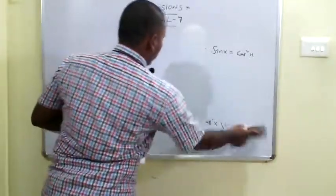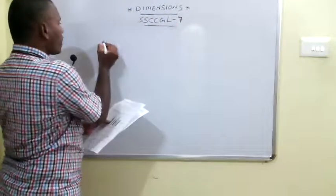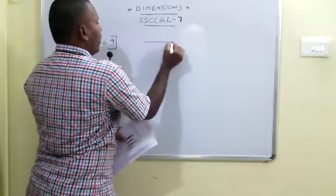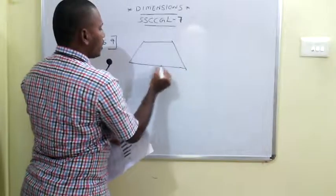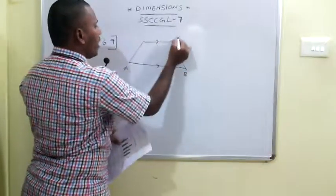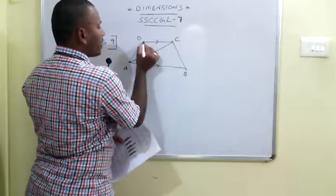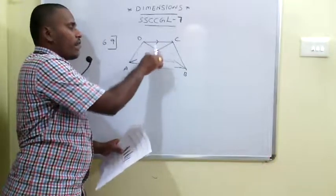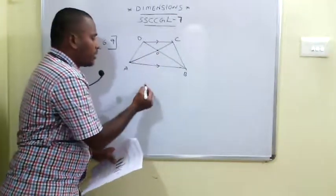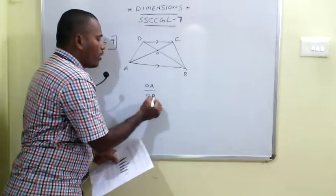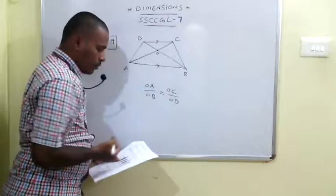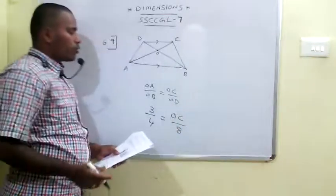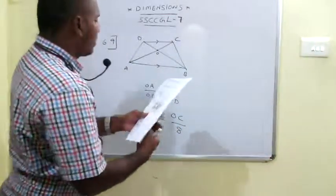The 69th problem: O is the intersection of diagonals AC and BD of trapezium ABCD. In a trapezium, the diagonals divide proportionally, so OA/OB = OC/OD. OA = 3, OB = 4, OD = 8 are given. Solving: OC = (3 × 8) / 4 = 6.